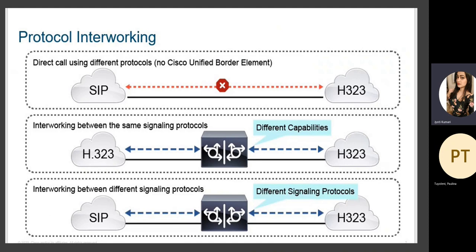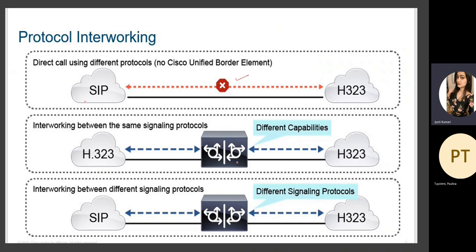For protocol inter-networking: direct calls using different protocols with no CUBE element will not communicate — if one site uses SIP and another uses H.323 with no CUBE between them, there will be no communication. CUBE is the solution. Inter-networking between the same signaling protocols works by default — H.323 to H.323, or SIP to SIP. With a CUBE device, inter-networking between different protocols such as H.323 to SIP or SIP to H.323 will also work.